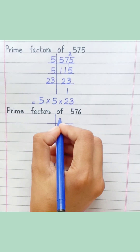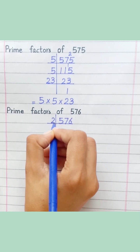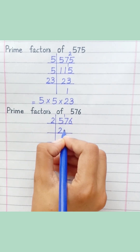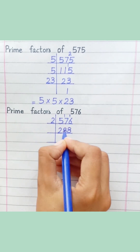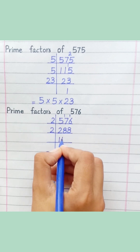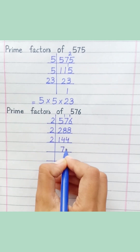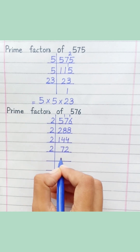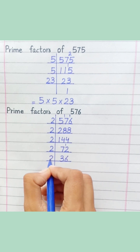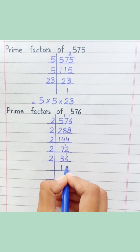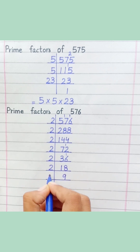Prime factors of 576. 2 twos are 4. 2 eights are 16. 2 ones are 2. 2 fours are 8. 2 sevens are 14. 2 twos are 4. 2 threes are 6. 2 sixes are 12. 2 ones are 2. 2 eights are 16. 2 nines are 18. 3 threes are 9.